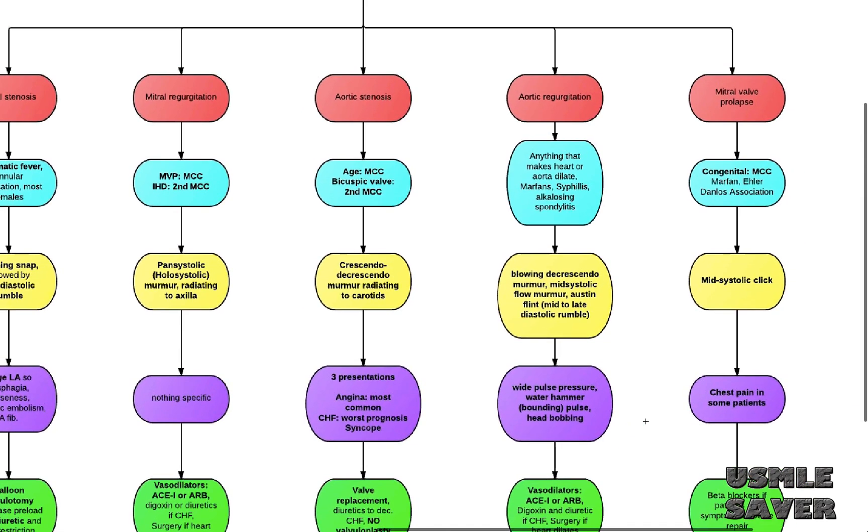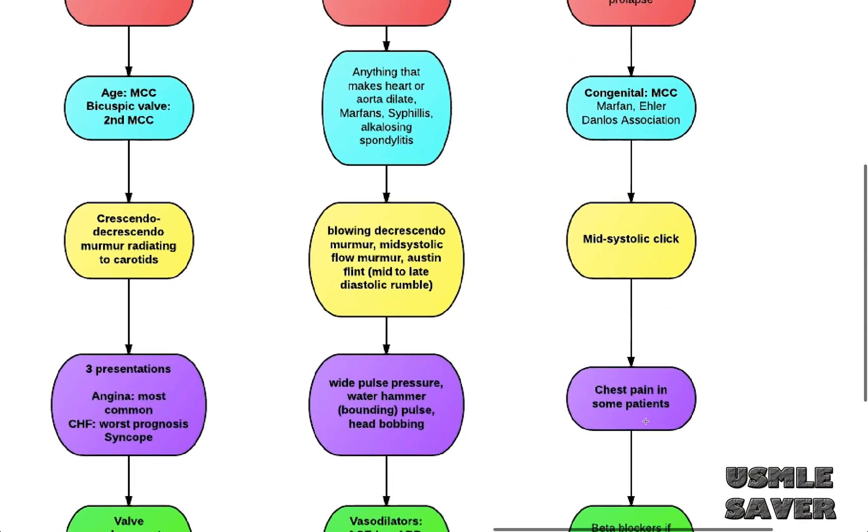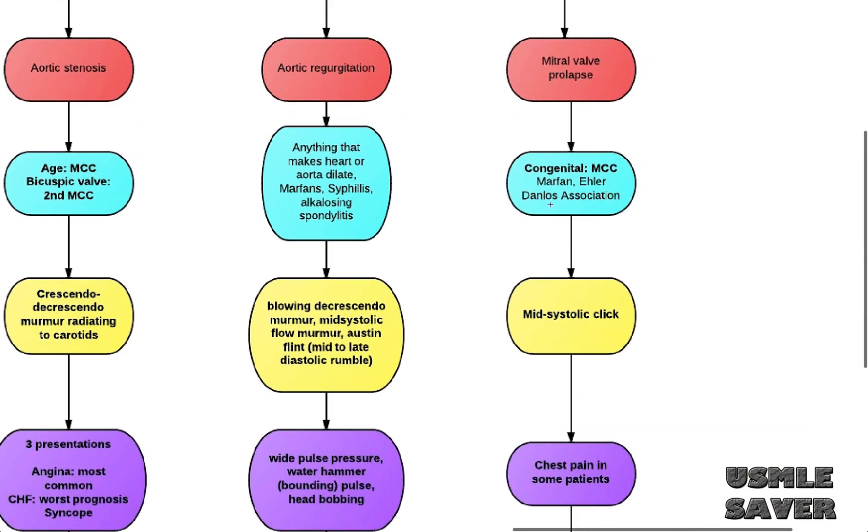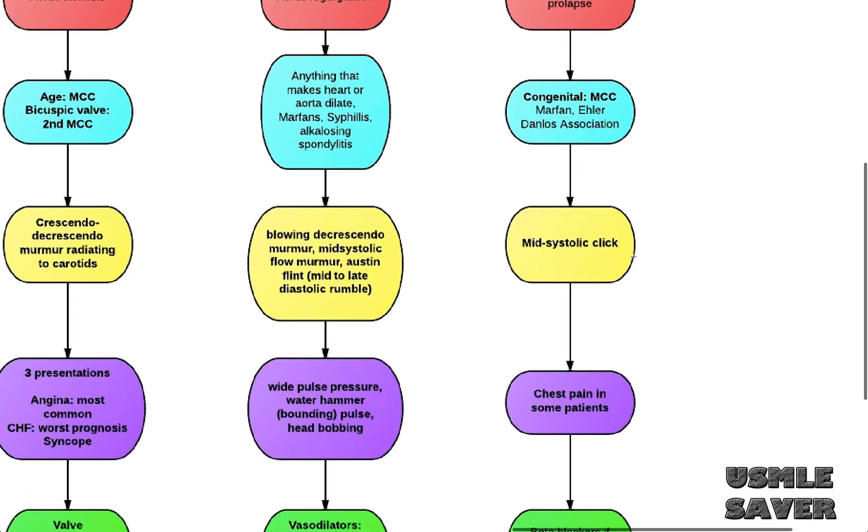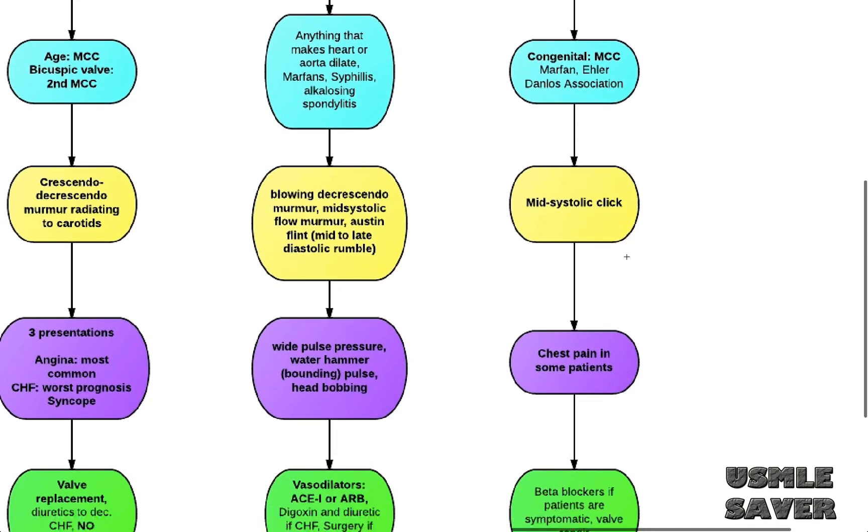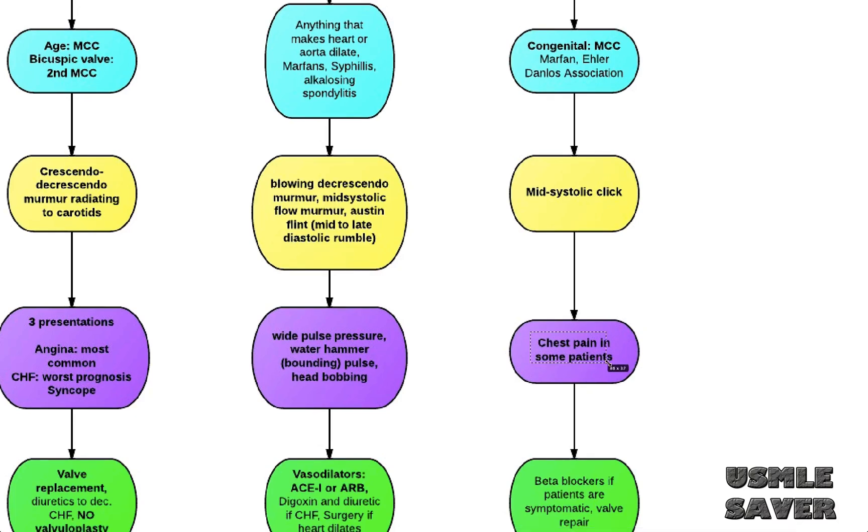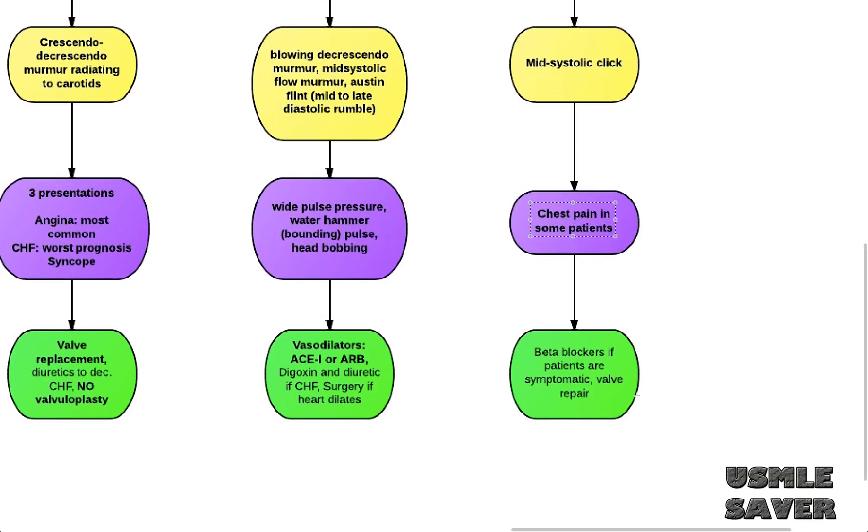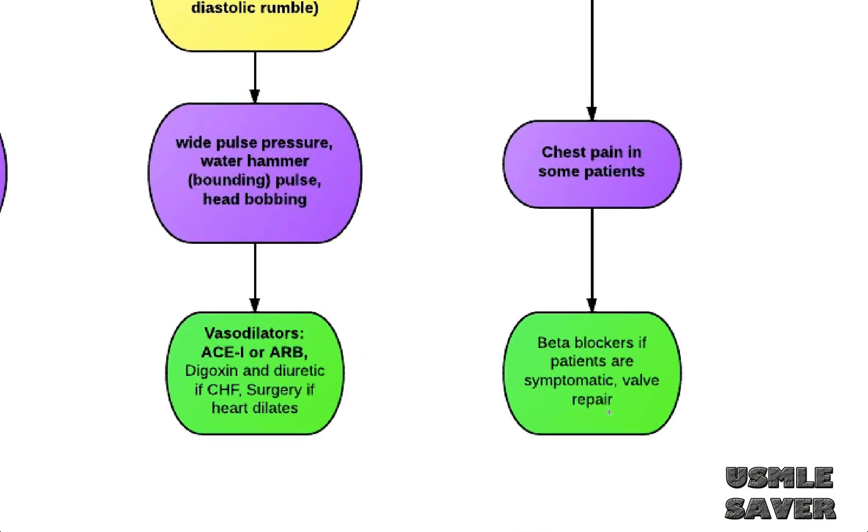Our last topic is mitral valve prolapse. Most common cause is congenital. This is also associated with Marfan's and Ehler-Danlos. Your pathognomonic murmur is mid-systolic click. These patients get chest pain. No one knows why these patients get chest pain, but from all valvular diseases, this is the only disease where patients get chest pain. You can treat these patients with beta blockers. Definitive treatment is valve repair. So this ends our mitral valve prolapse.